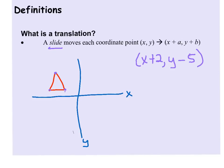For example, if I say that the translation is x plus 2 and y minus 5, that means I am moving all of the x values two units to the right, and I'm moving all of the y values five units down.